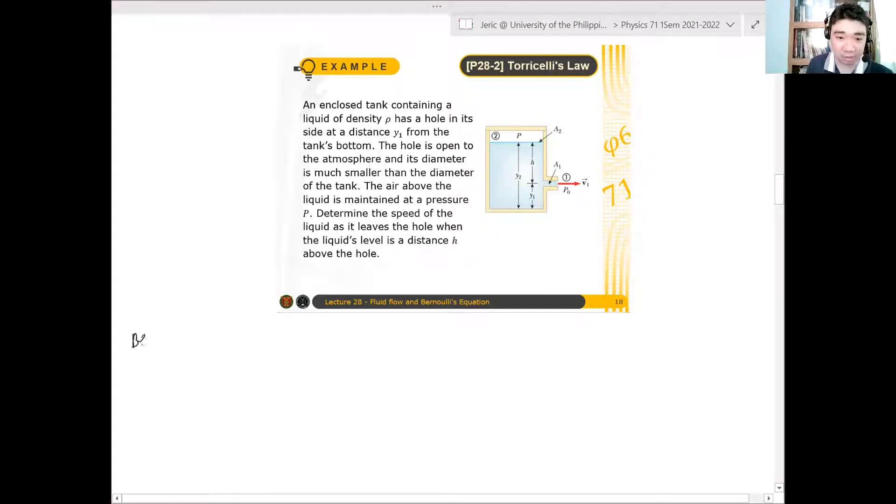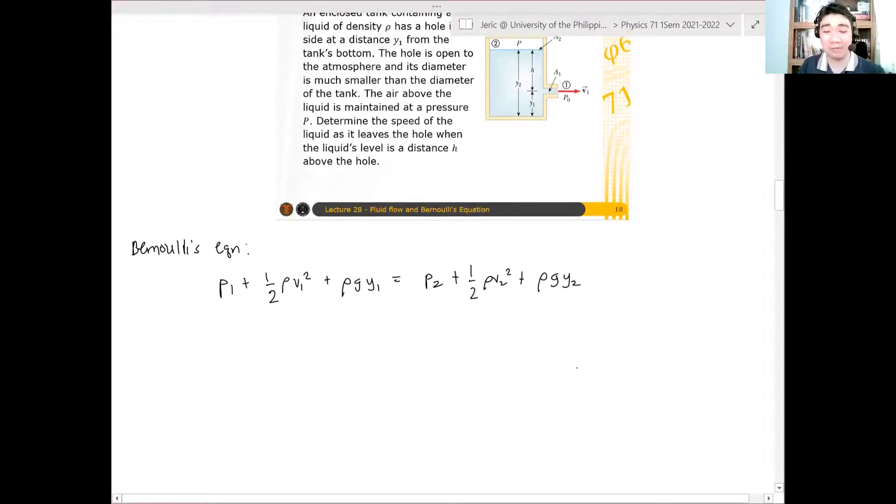First, I'm going to write Bernoulli's equation. Bernoulli's equation is basically this. We have conservative pressure P1, plus kinetic energy per volume one half rho V1 squared, plus potential energy per volume rho G Y1, equals P2 plus one half rho V2 squared plus rho G Y2. This is conservation of energy.